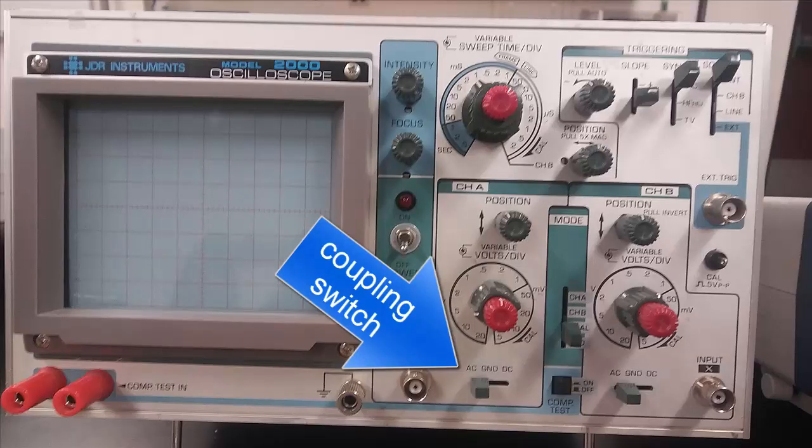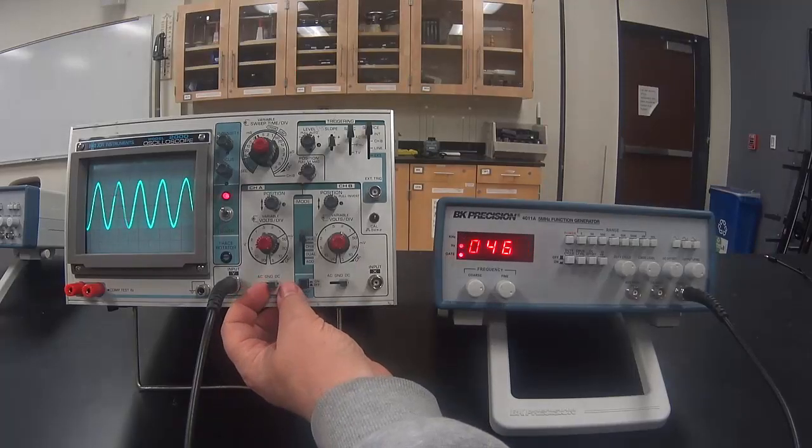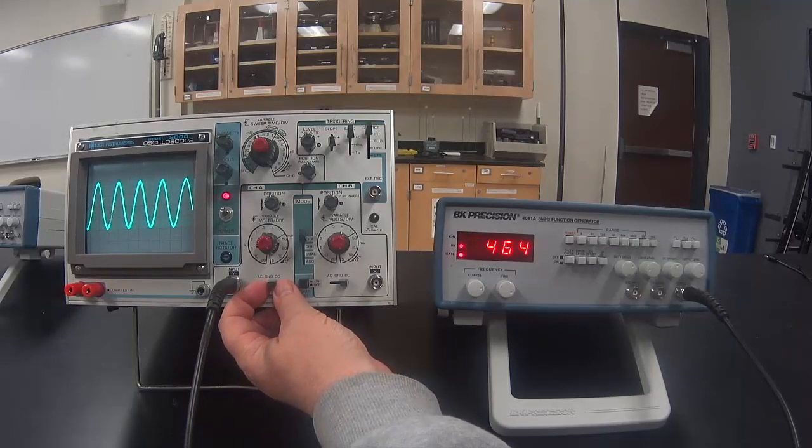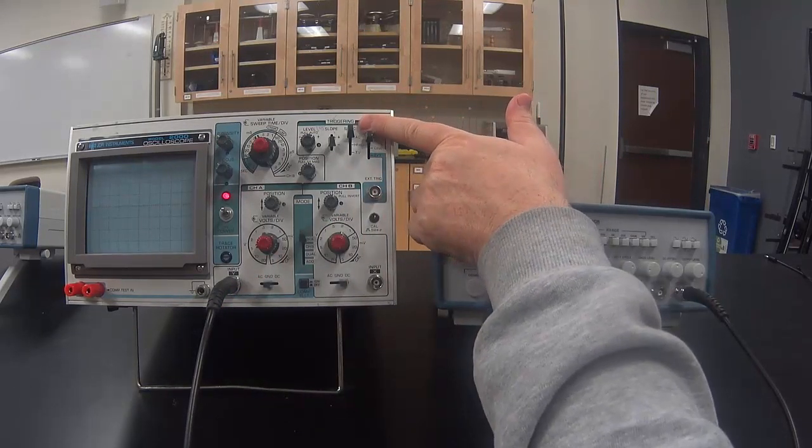The following is the coupling switch. Most of the time you put it on DC, even if you are recording an AC signal. If we switch it on ground then we can find out where the zero for voltage is. When we switch the coupling switch to ground, we need to switch the trigger source to line or it won't draw the signal. Switching to ground. Switching source to line.